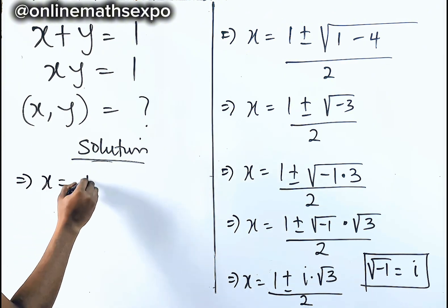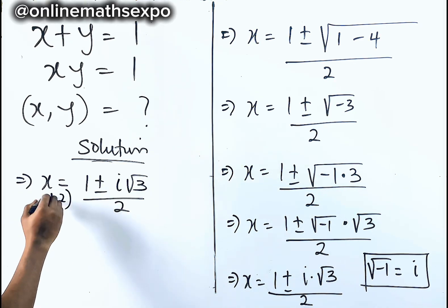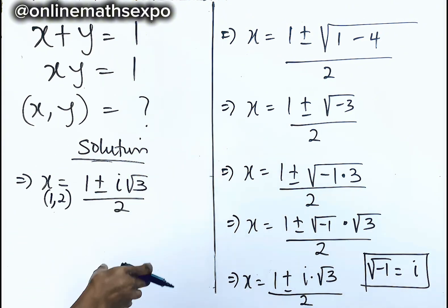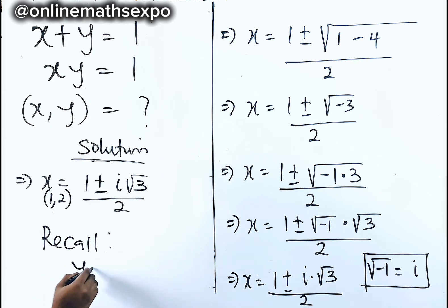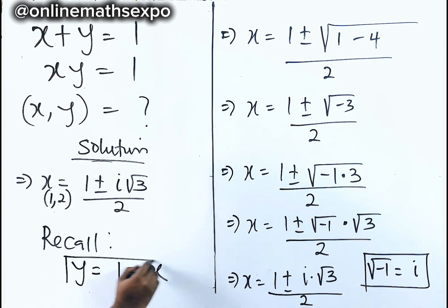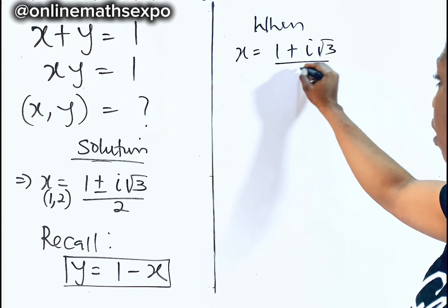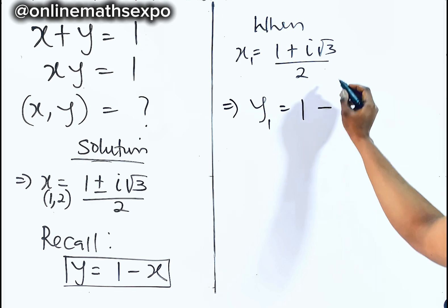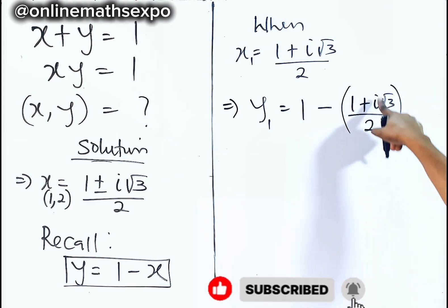So x equals 1 plus or minus i root 3, divided by 2. These are the first and second values of x. Remember, we also need to get both values of y. To get the values of y, we use y equals 1 minus x. When x equals 1 plus i root 3 divided by 2, the corresponding y equals 1 minus that expression, with the value placed in brackets.